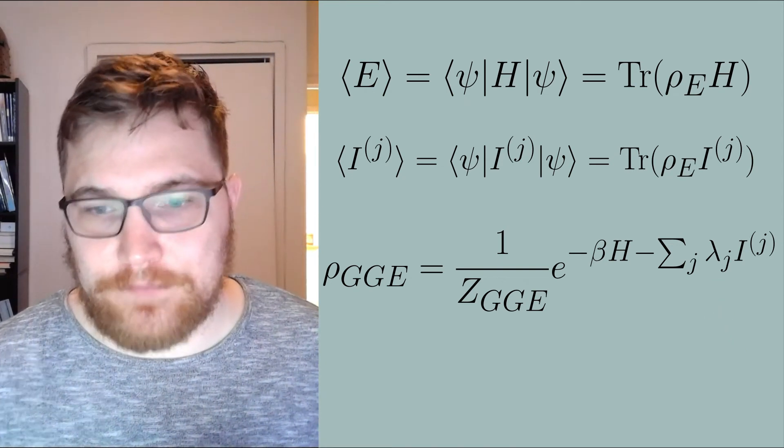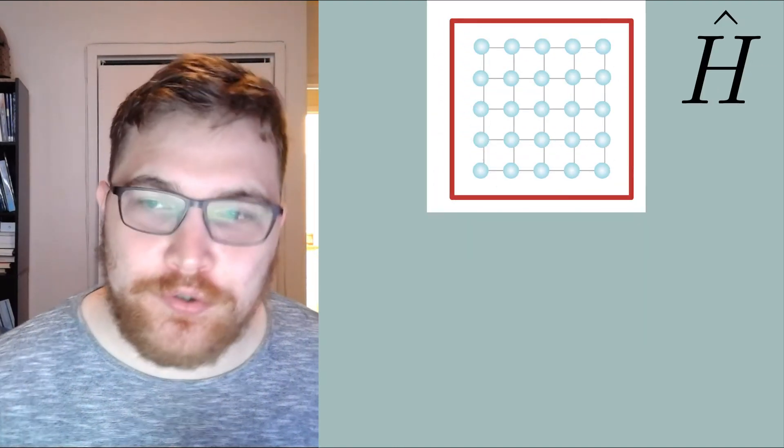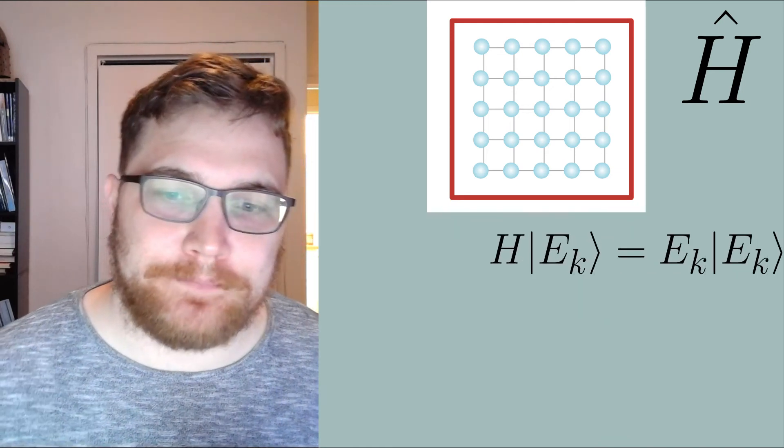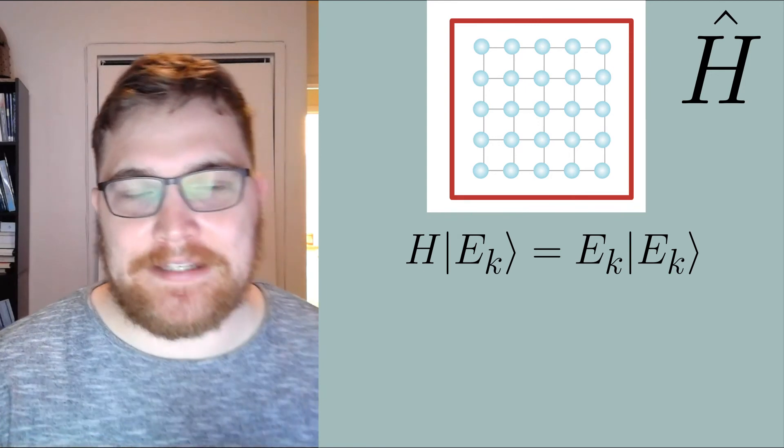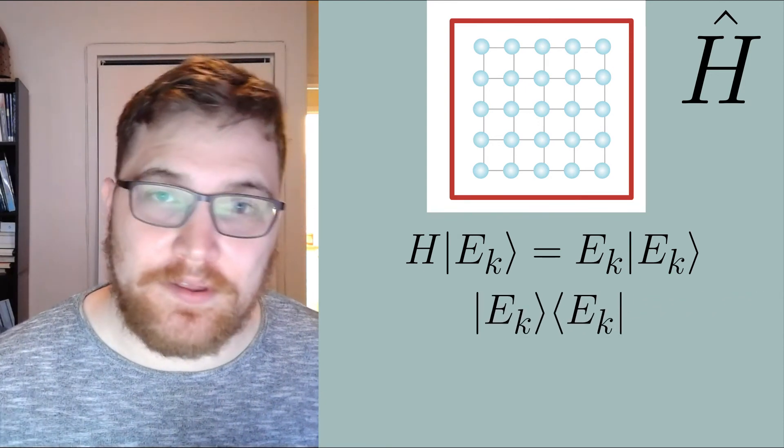So last but not least is the so-called eigenstate ensemble. Suppose we have a Hamiltonian governing some quantum system H. It's typical to imagine perhaps a lattice of spins, fermions, or bosons. Then we write the eigenstates of the Hamiltonian in the following way. The eigenstate ensemble is written as the outer product of some energy eigenket with itself.